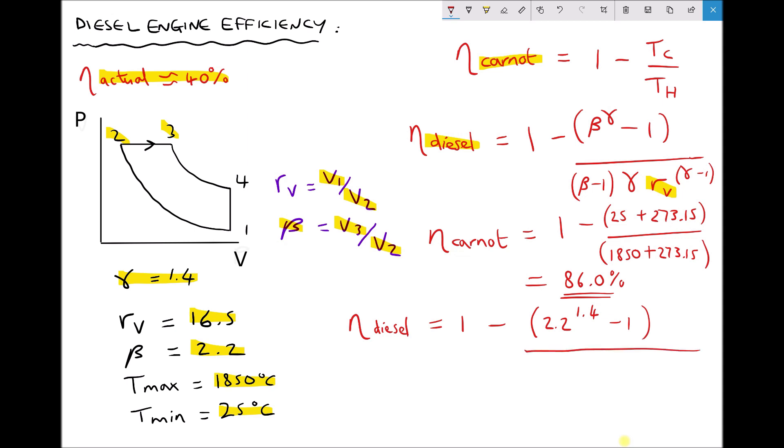The bottom of our fraction then is beta minus 1 and I'm going to simplify this as I go. Beta is 2.2 minus 1 is 1.2. We've already said that gamma is 1.4 and our volumetric compression ratio is 16.5.